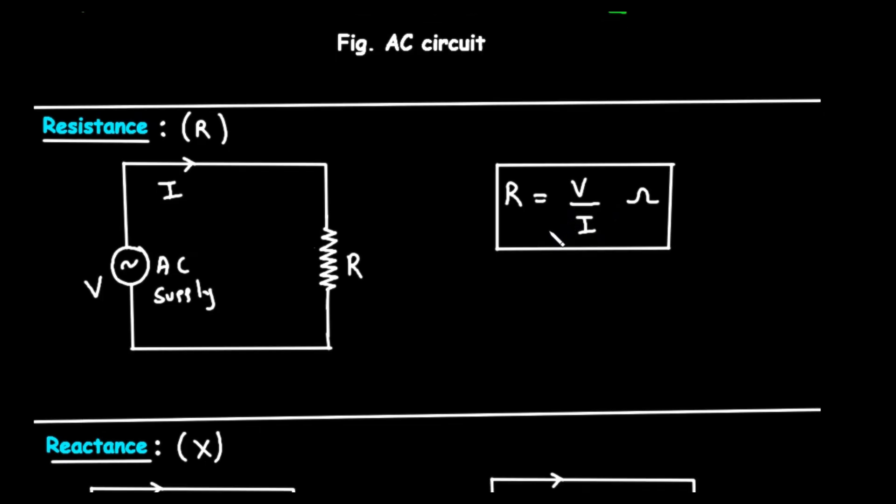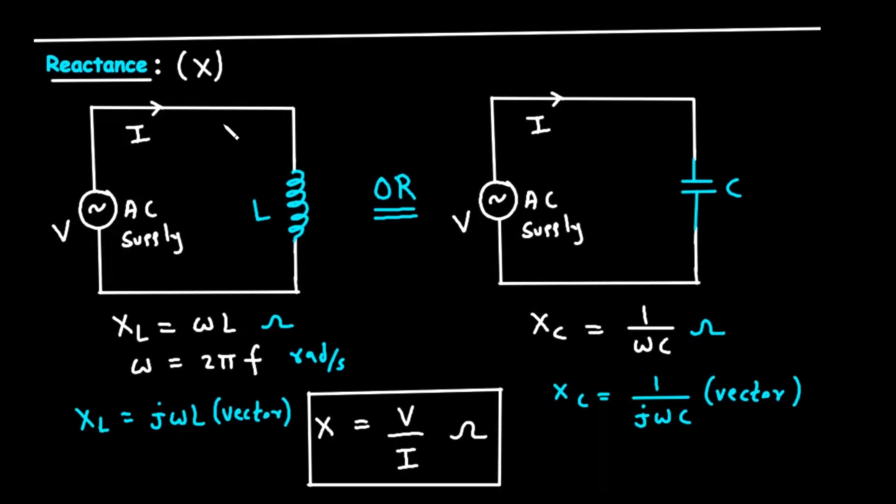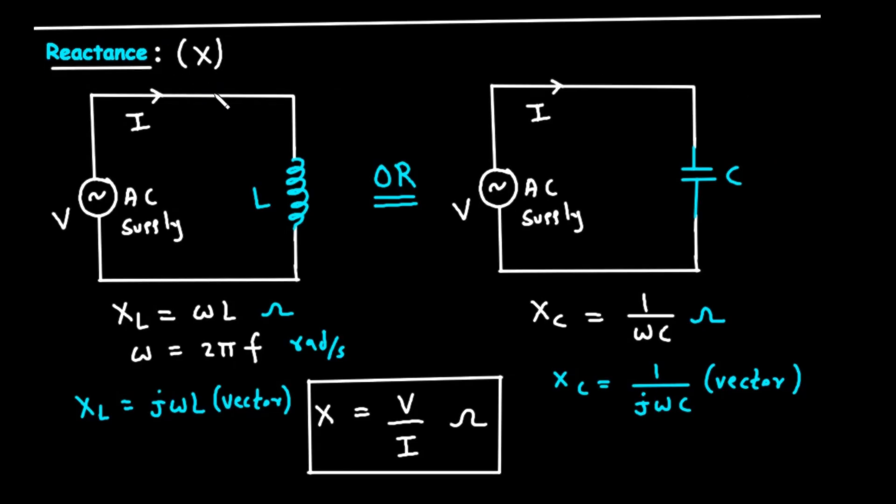Now, let's introduce a new idea: reactance, represented by the letter X. Reactance is also a form of opposition to current flow, but it's unique to AC circuits. It's the opposition offered by components that store energy, specifically inductors and capacitors.